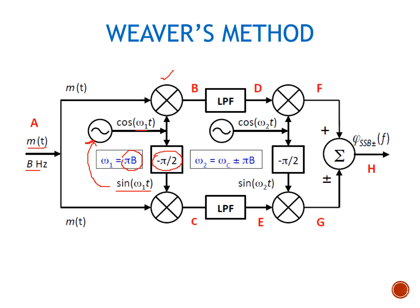Omega_1 is kept low and is equal to pi*B, where B is the bandwidth of the message signal. At the output we have signals at points B and C, which are passed through low pass filters. Then a similar multiplication is performed using cos(omega_2 * t), split into two parts given to multipliers, with one part phase-shifted to sine(omega_2 * t). Omega_2 equals the desired carrier frequency plus or minus pi*B, where pi*B depends on the bandwidth B of the message signal. The signals at points F and G are then added or subtracted to get the SSB modulated signal.